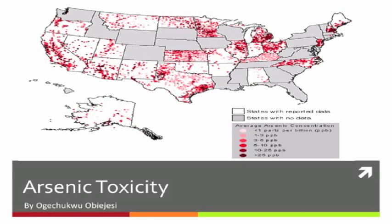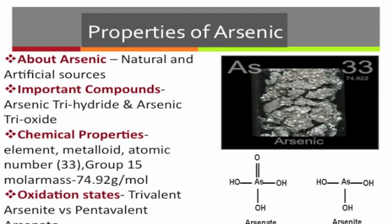Properties of Arsenic. Arsenic is derived from the Greek word 'arsenicon' meaning yellow or payment. It occurs naturally in sedimentary rocks and ores and is emitted into the atmosphere by weathering and volcanic eruptions.